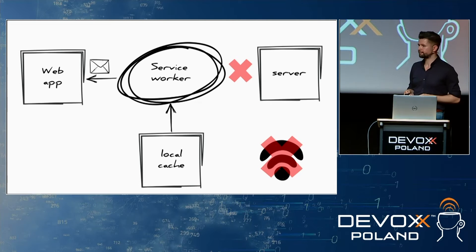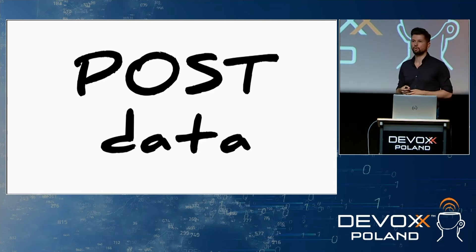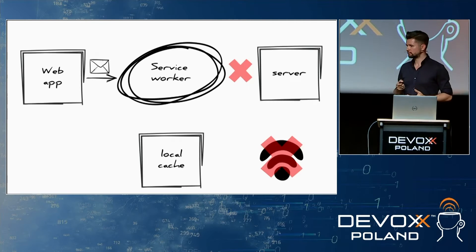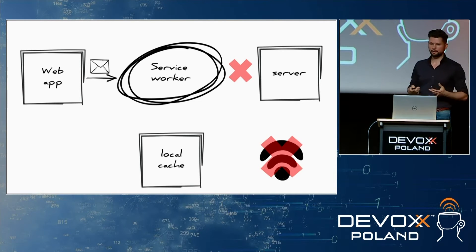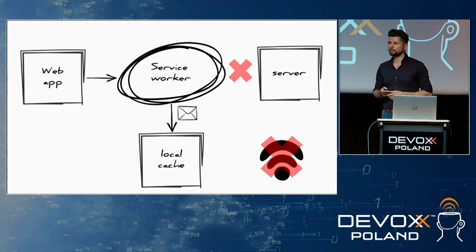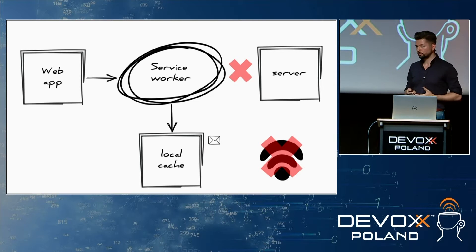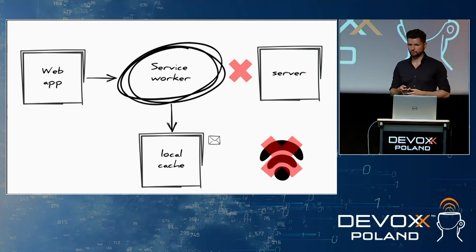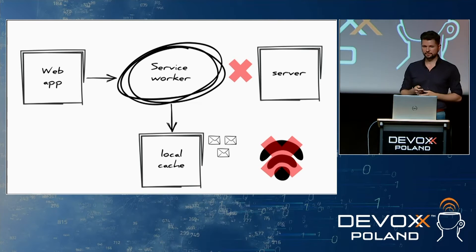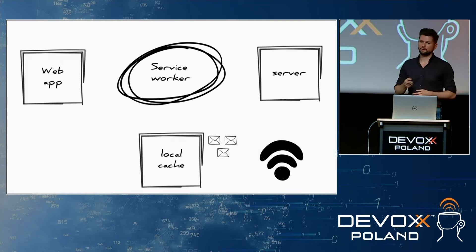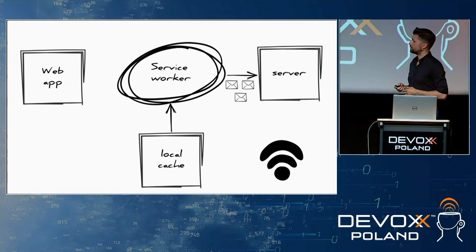What about when our application wants to add data? The application sends a POST request, which is handled by the service worker. Instead of forwarding it to the server — since there's no connection — the service worker stores the request inside a local cache queue, preserving the order of messages. When we're back online, the service worker retrieves those queued messages and sends them to the server in the proper order.